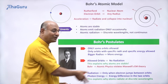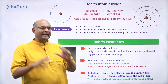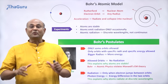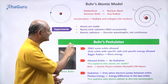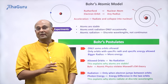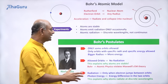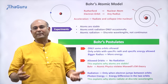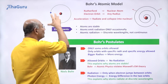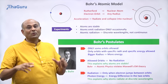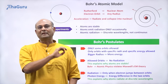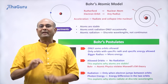Bohr's postulates suddenly gave a lot of clarity to scientists because they were able to describe atoms with a new model — very different from what Rutherford had presented, but still using the fact that it is a nuclear model — and were able to explain a lot of the observed experimental facts.